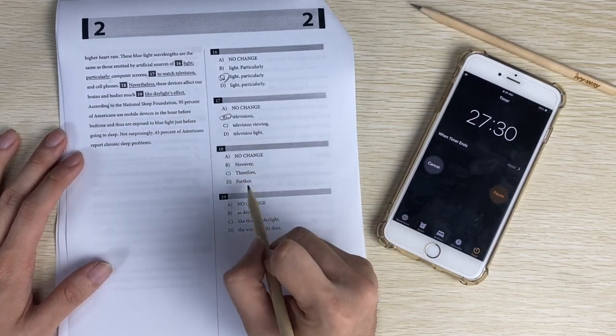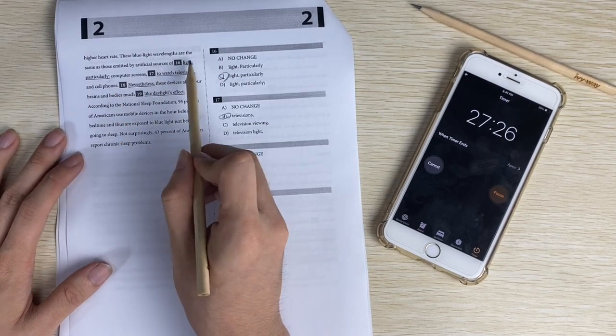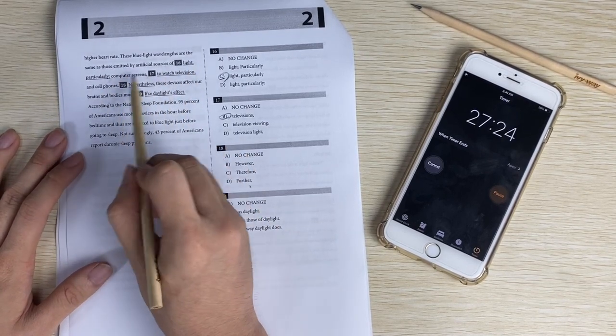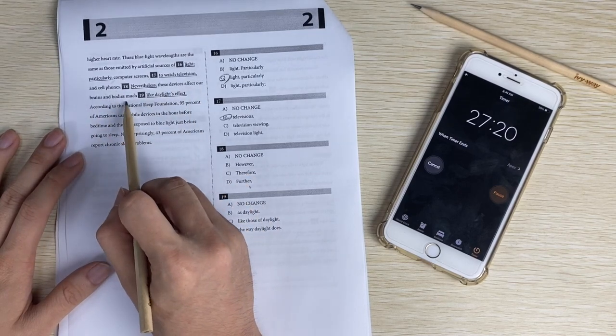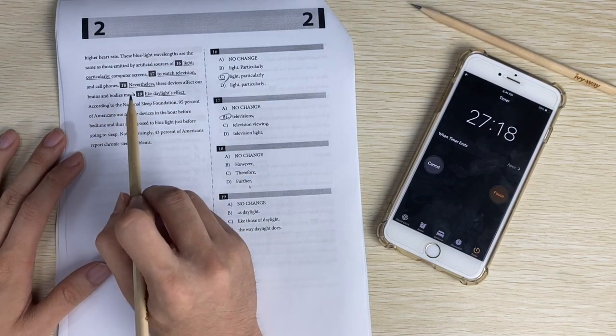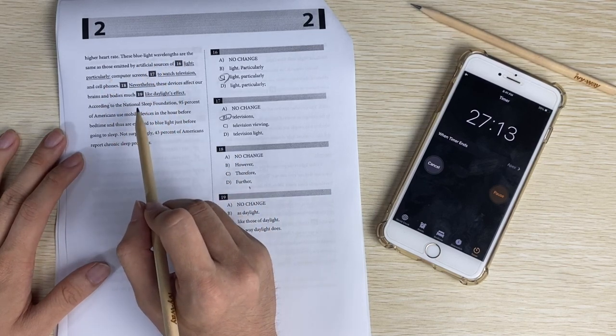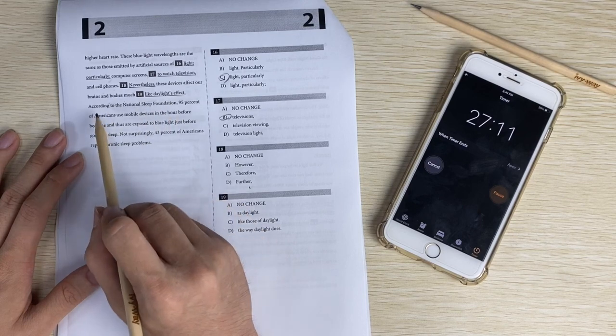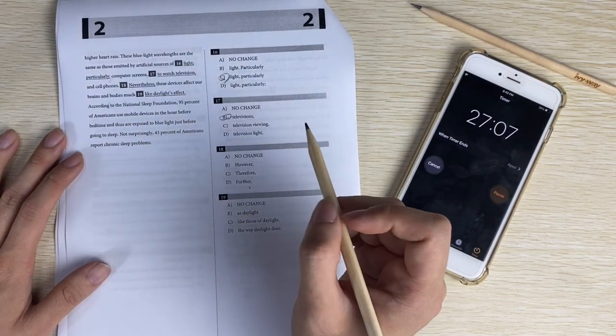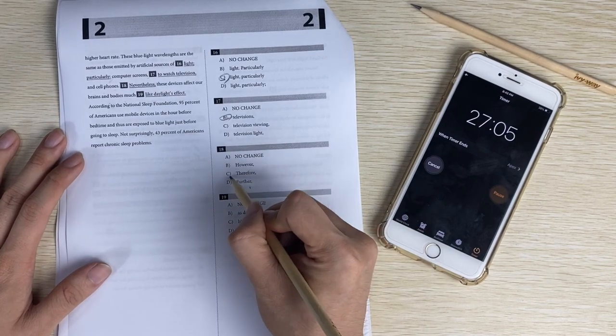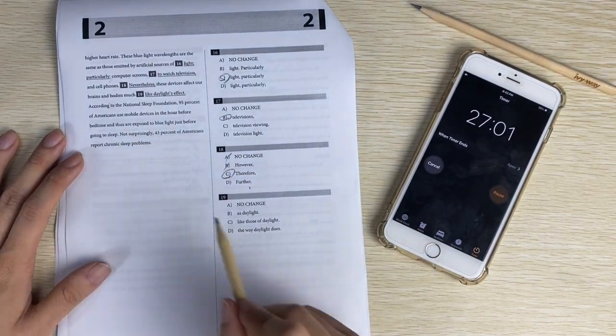Number eighteen, logic. These lights are the same by artificial sources like these. These devices affect our brains. So they are the same, so they affect our brains. So it's cause and effect. So it should be C, and it's also not A because A and B are the same - they're both opposite.